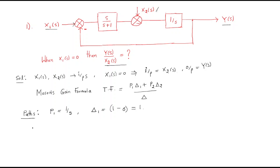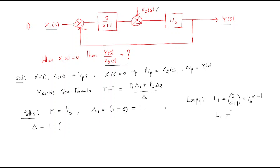Now for Δ, which equals 1 minus the sum of individual loop gains. We have only one loop, L1. The loop gain is s/(s+1) multiplied by 1/s multiplied by -1, so L1 = -1/(s+1). This is loop gain 1.